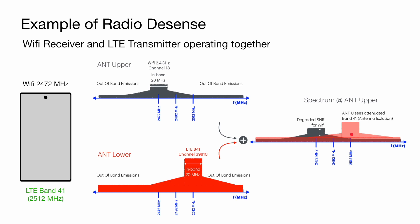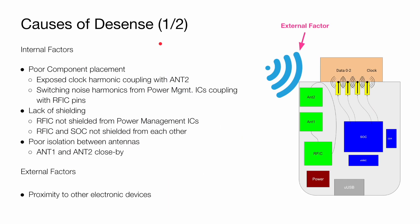Notice that the LTE band 41 power has also been attenuated by some amount compared to the lower antenna, and that is a function of antenna isolation between the upper and lower antenna.